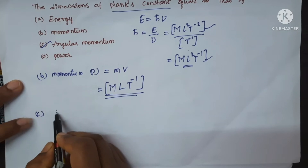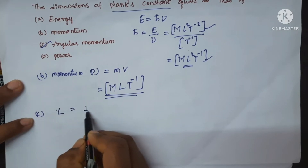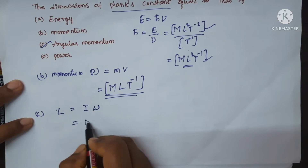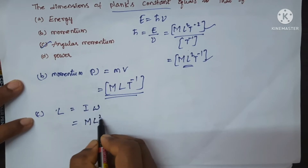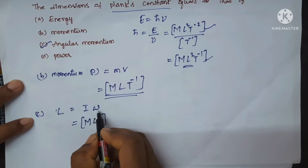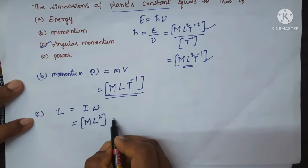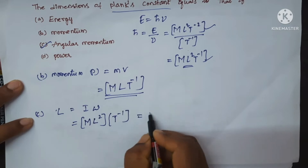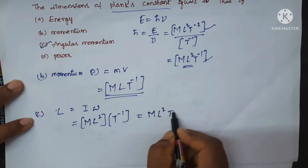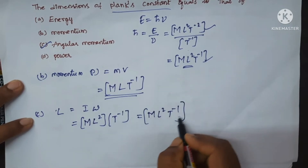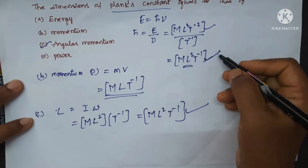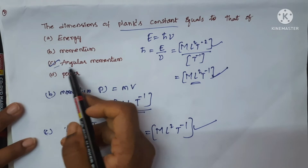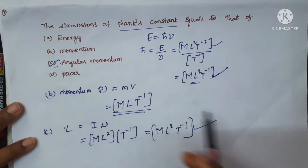Let's find for the third one, that is angular momentum. Angular momentum L is equal to formula I omega. The dimensions of I are M L square, and here omega is the angular velocity, that is T power minus 1. So which is equal to M L square T power minus 1. Both are same — Planck's constant and angular momentum have the same dimensions. So C is the correct option.